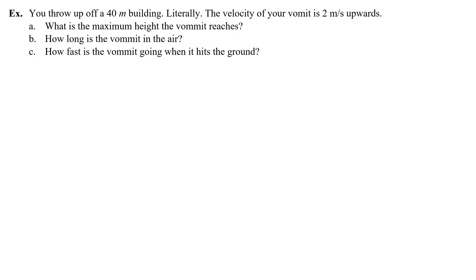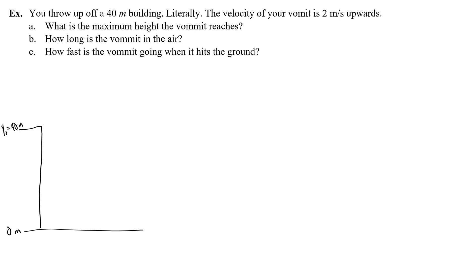Let's do one more problem. You throw up off a 40-meter building — literally. The velocity of your vomit is 2 meters per second upwards. What is the maximum height the vomit reaches? How long is the vomit in the air? How fast is the vomit going when it hits the ground? This is a classic throw-up problem. I'm going to say the ground here is zero, and y₀, our initial height, is 40 meters. The top of the building is 40 meters, so we put the ground at zero.